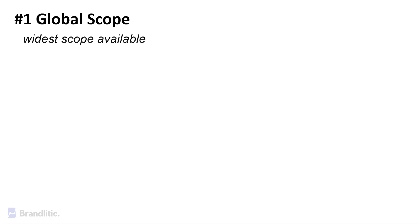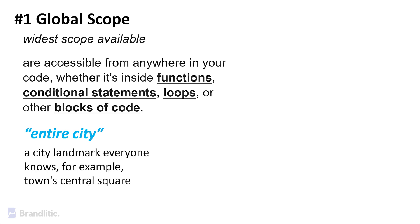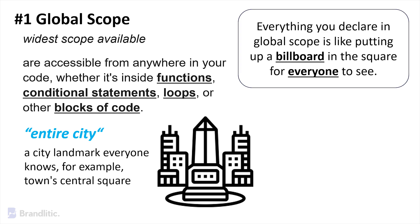Variables declared in Global Scope are accessible from anywhere in your code, whether it's inside functions, conditional statements, loops, or other blocks of code. You may think of Global Scope as the entire city — it's the most unrestricted area and variables can be accessed from anywhere in your code. Like a city landmark everyone knows, for example, a town's central square. Everything you declare in Global Scope is like putting a billboard in the square for everyone to see.